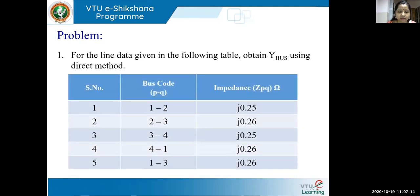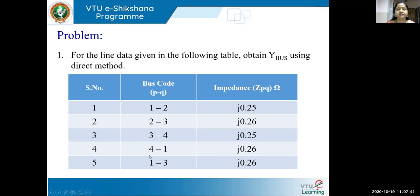This is a table of line data. Line number one is connected between bus one and two, having impedance of j0.25. Line number two is bus two to three, with impedance j0.26. Line number three is three to four, j0.25. Similarly, four to one and one to three are j0.26. One very important thing to check is whether the data is given in the form of impedance or admittance, because students often go wrong by misreading the data.